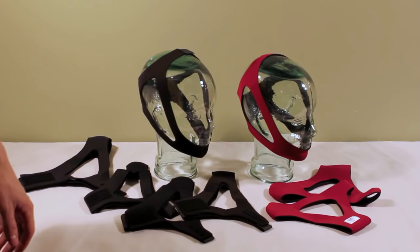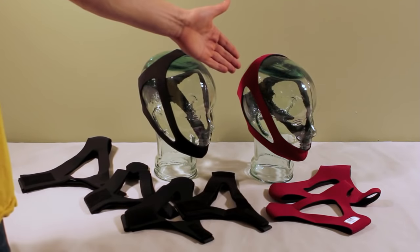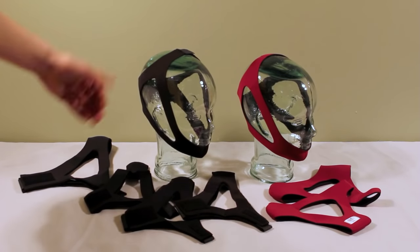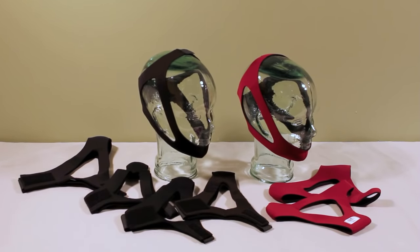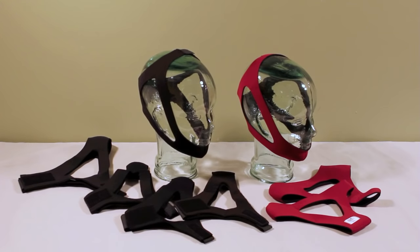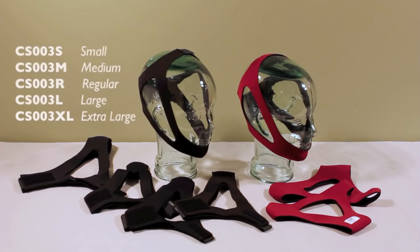As I said before the CS007 ruby style chin strap is similar to our CS003 sunset adjustable chin strap. However the ruby style chin strap comes in three sizes small, medium and large